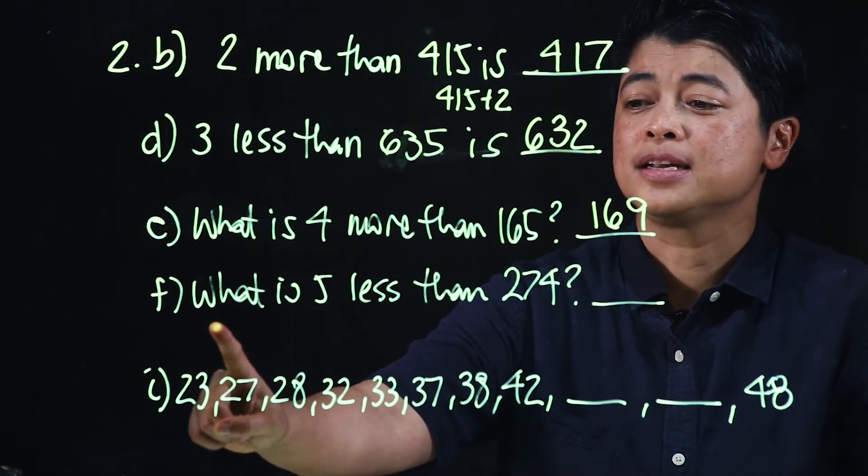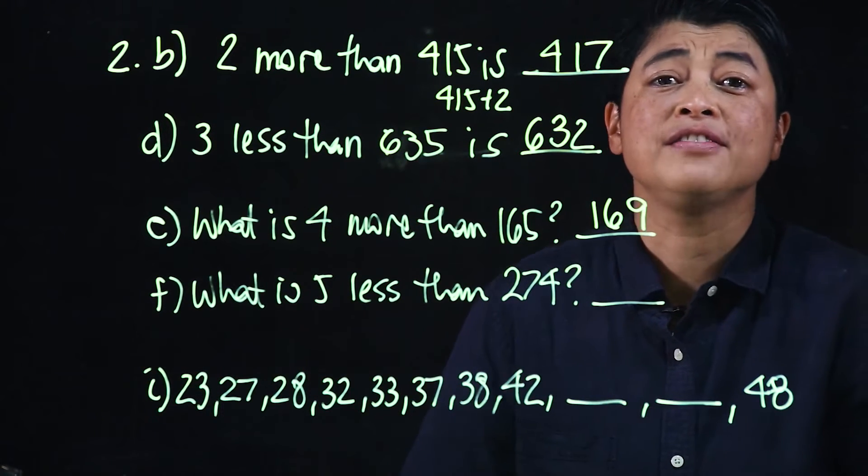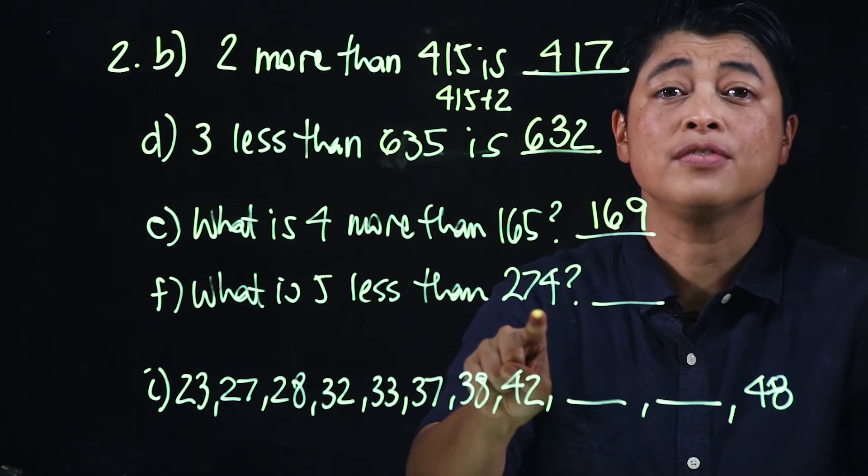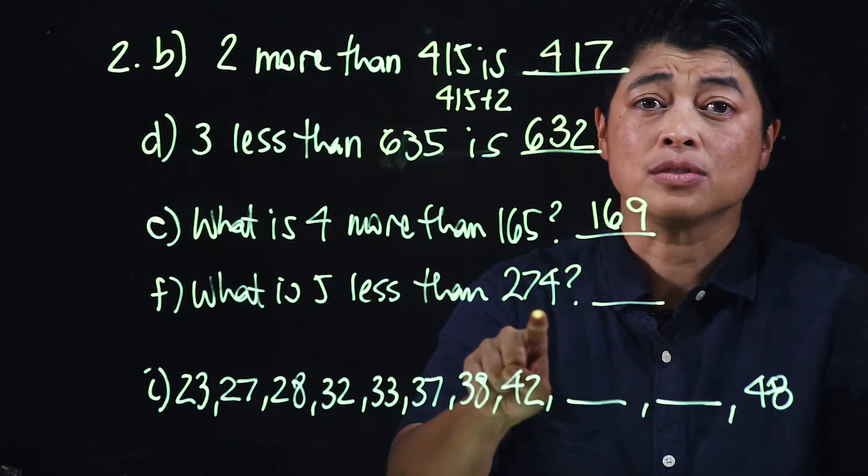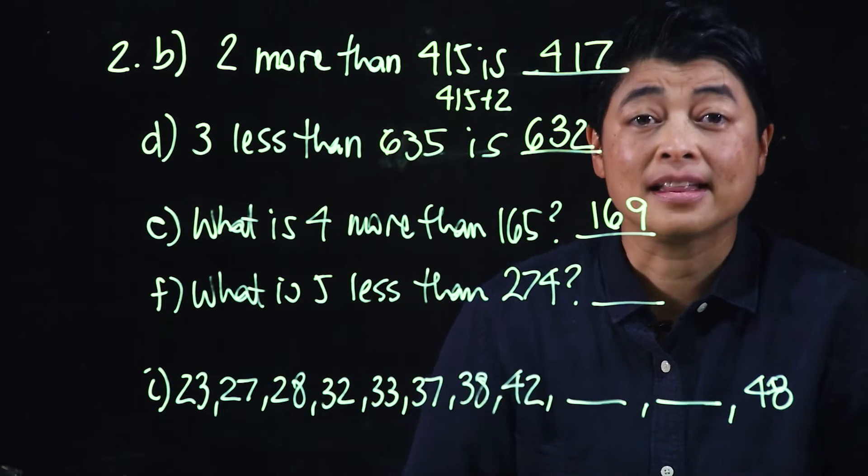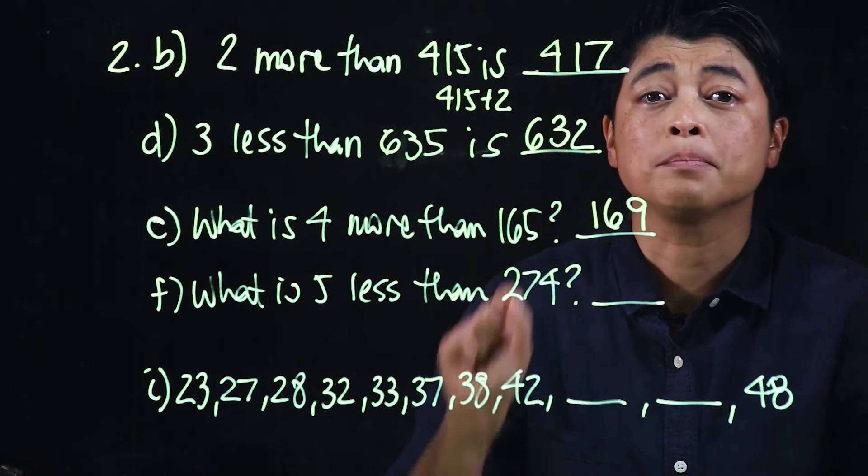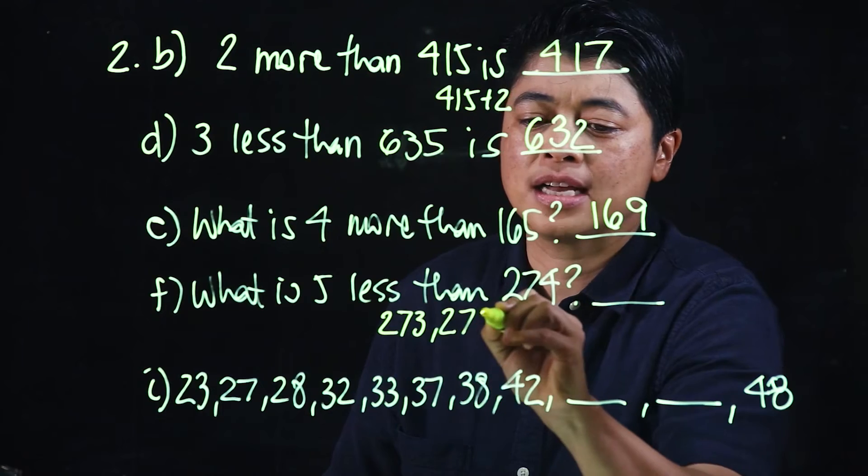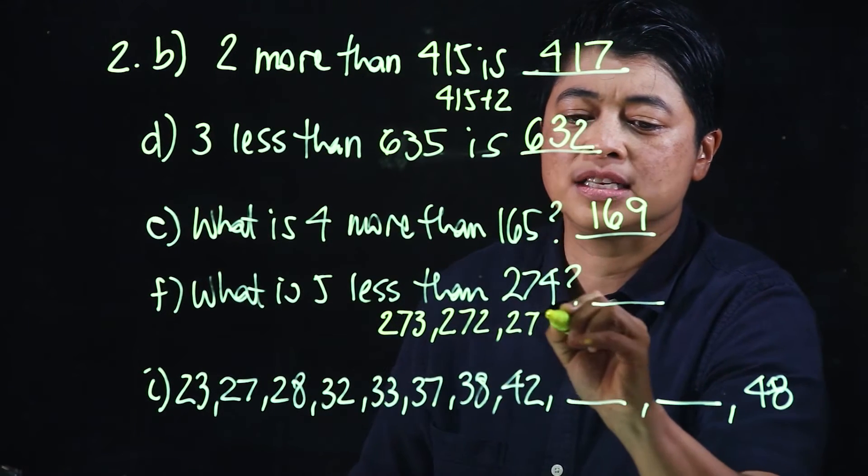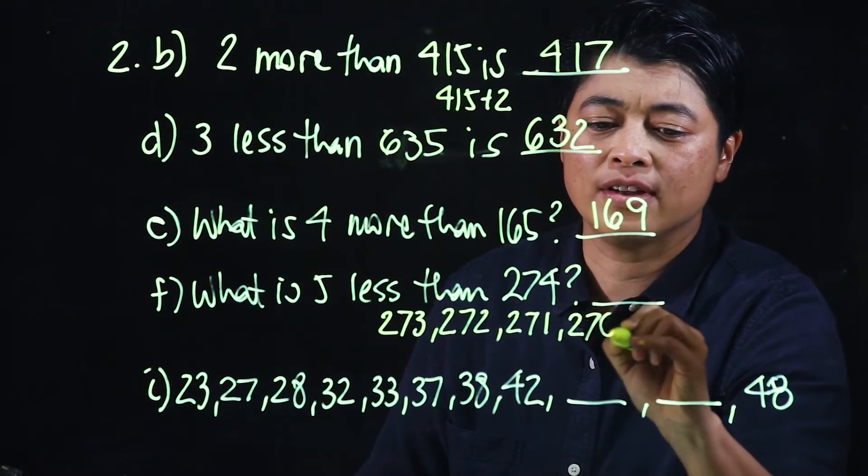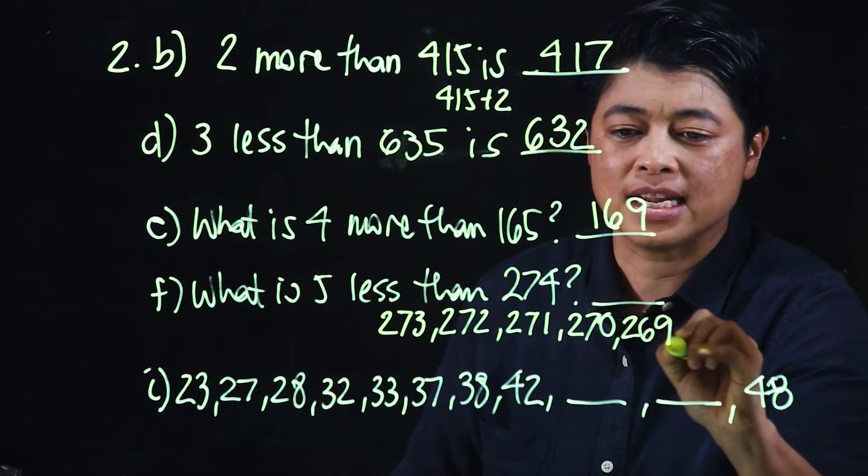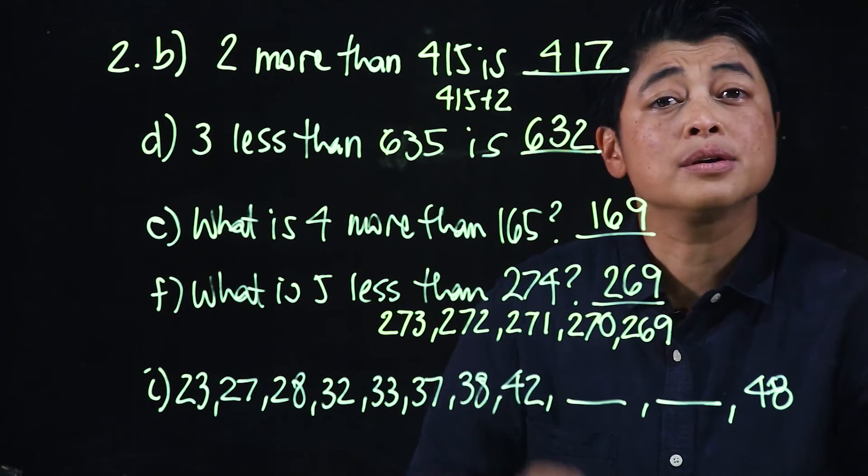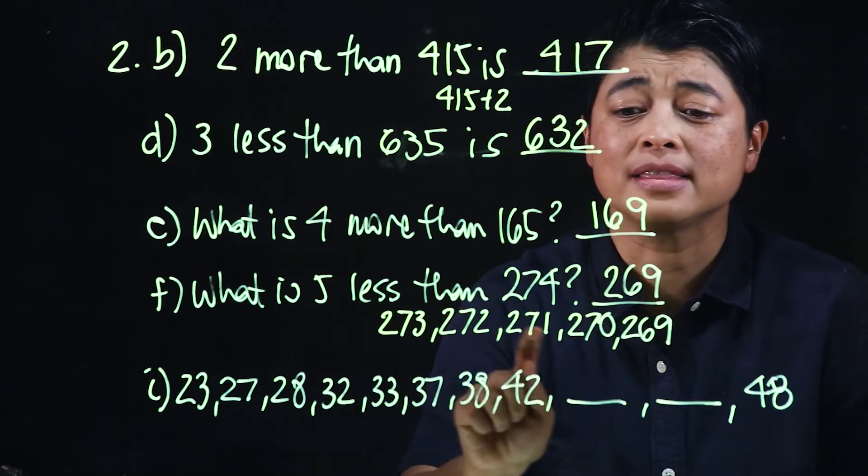And then it says, what is 5 less than 274? Which means we're subtracting 5 from 274. But the kids are not taught how to do regrouping yet, therefore the ideal thing to do is to count back. So 273, 272, 271, 270, and 269. Therefore this will be 269. So they could count with their fingers or they could write it down. It's safest for them to write it down.